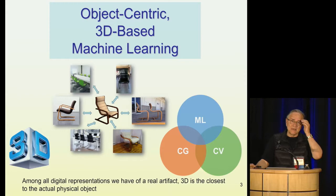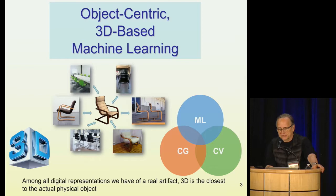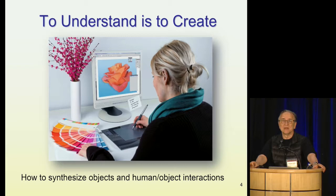This talk is a combination of machine learning, computer vision, and computer graphics. Computer graphics, not only because of 3D, but also because I strongly believe that to understand something means to be able to create it. So part of this talk will focus on synthesis — synthesis of objects and synthesis of interactions of humans with objects.